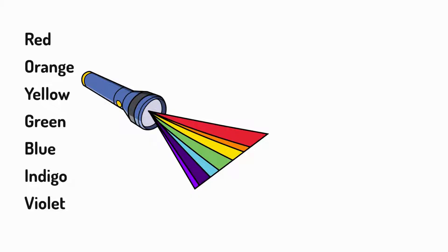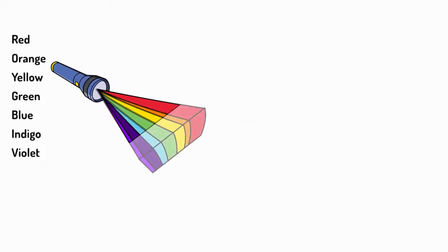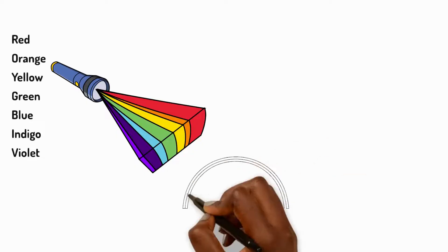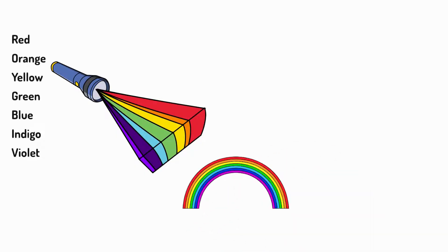Each colour in white light bends by a different amount when it enters a new material. This explains why rainbows form.